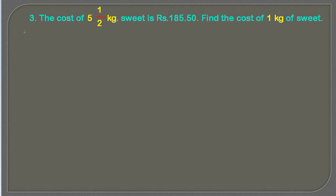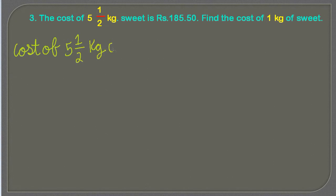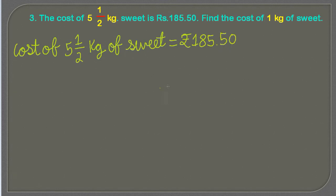To solve this question, first of all we are going to write these statements. So the first statement would be: the cost of five and a half kg of sweet equals rupees 185.50.